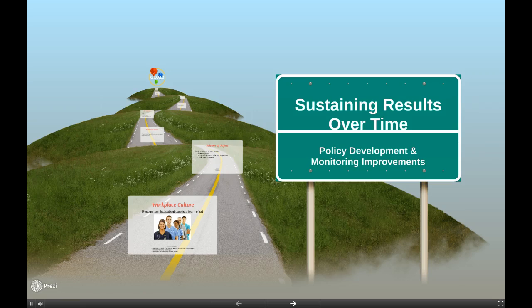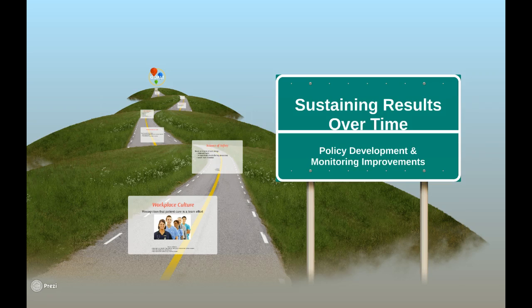This module is designed to provide tips for improving infection prevention activities to avoid healthcare-associated infections. The module includes information on developing workplace culture, environment of care assessment, and policy considerations. References have been included at the end, as this is not a comprehensive review of all infection control practices.